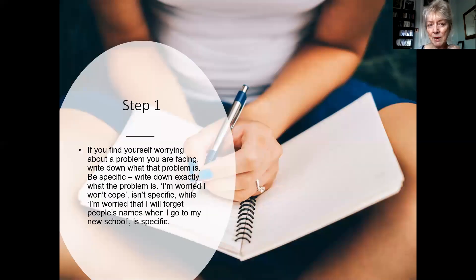So let's go through the steps. Step one: if you find yourself worrying about a problem you're facing, write down exactly what that problem is. Be very specific. I'm worried I won't cope isn't specific, for example, whereas I'm worried that I will forget people's names when I go into my new school is specific, and it's important to be that specific.